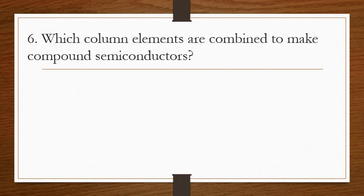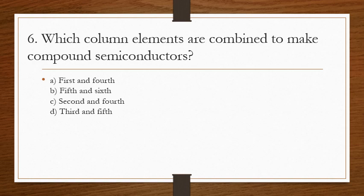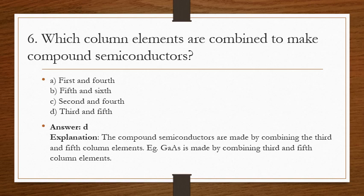Question 6: which column elements are combined to make compound semiconductors? The correct answer is D. Compound semiconductors are made by combining the third and fifth column elements. For example, gallium arsenide is made by combining third and fifth column elements.